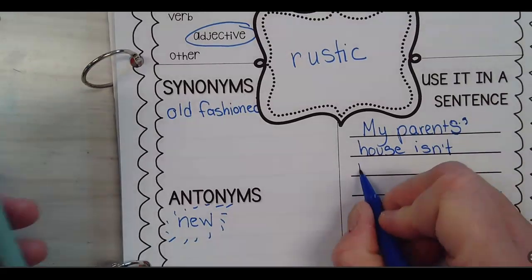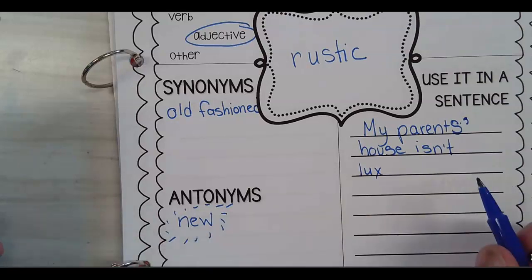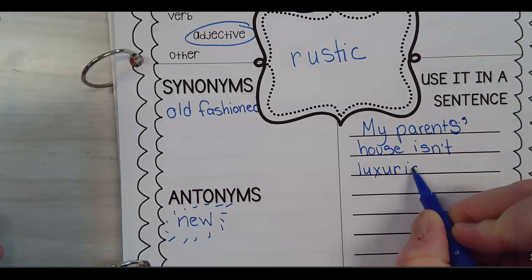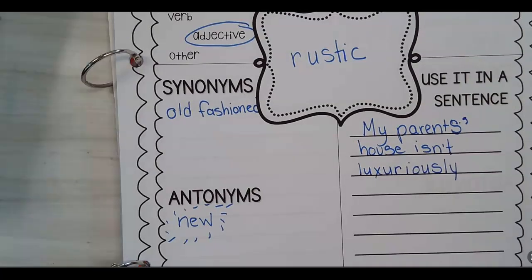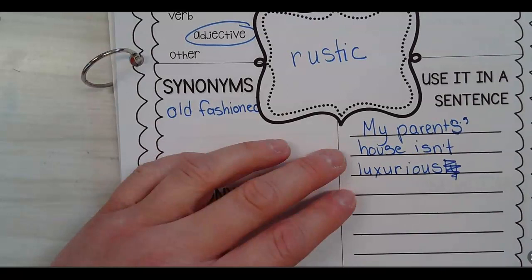My parents' house isn't luxurious. Of course you're going to pull out the big vocabulary. We were just talking about this. I know it's going to start with L-U-X. Luxuriously. Did you say luxurious? Sorry, I added. My parents' house isn't luxurious. It is rustic. Is that what you said?